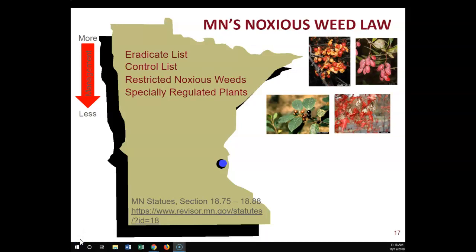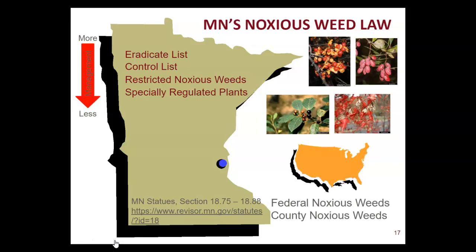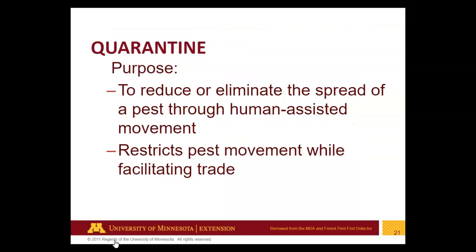There are also several different levels that think about invasive species. The federal government has a whole invasive species program, and there is both a federal noxious weed list and a county noxious weed list. The county lists are sometimes most appropriate to local landowners. A different type of regulatory action is a quarantine. Most insects and diseases fall under invasive pest quarantines managed by the Minnesota Department of Agriculture. We currently have four quarantines: Emerald Ash Borer, Gypsy Moth, Thousand Cankers Disease on Walnut, and Mountain Pine Beetle. The purpose of a quarantine is to reduce or eliminate the spread of a pest through human-assisted movement, while also facilitating trade.